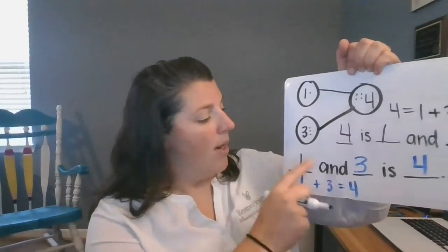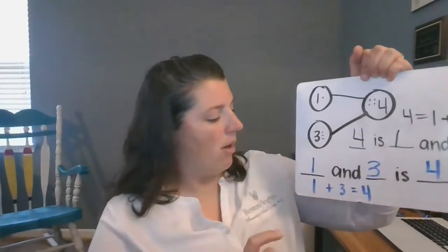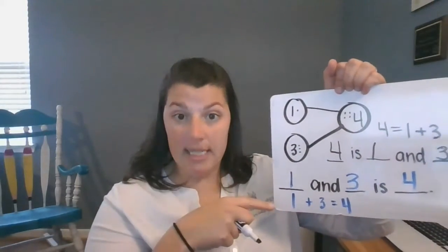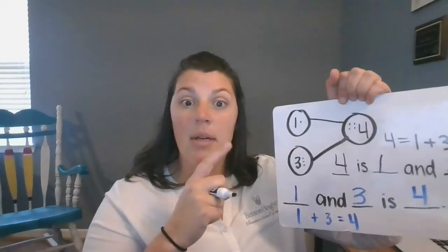Or, one and three is four. One plus three equals four. These things all represent the same combinations to make the number four.